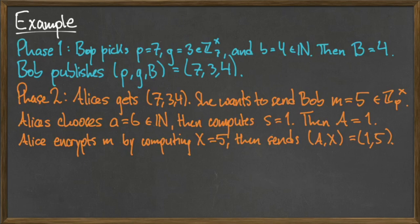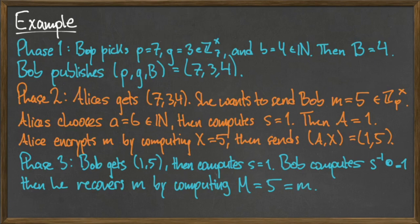Next, Bob computes the inverse of the element s = 1 in the multiplicative group Z mod 7, which is also equal to 1. Finally, he recovers Alice's original message little m by computing capital M = 5 times 1 mod 7, which is exactly equal to Alice's original message m = 5.